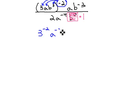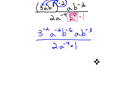We also have a^(-2), and the power of a power rule says to multiply 3 times negative 2 to get negative 6. We still have ab^(-3) over 2a^(-4) times 1.